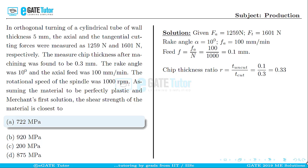Simplifying gives the chip thickness ratio r = 0.33. Now the next step is to calculate the shear plane angle. The shear plane angle beta is calculated as: tan(beta) = r·cos(alpha) / (1 − r·sin(alpha)), where r is the chip thickness ratio and alpha is the rake angle. Substituting r = 0.33 and alpha = 10 degrees and simplifying gives the shear plane angle beta = 19.18 degrees.